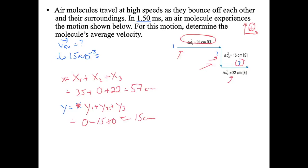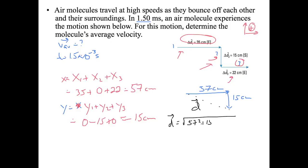We now draw our result triangle with plus 57 centimeters in the x-direction and minus 15 centimeters in the y-direction. The hypotenuse is our displacement: displacement equals the square root of 57 squared plus 15 squared, which equals 58.9 centimeters.